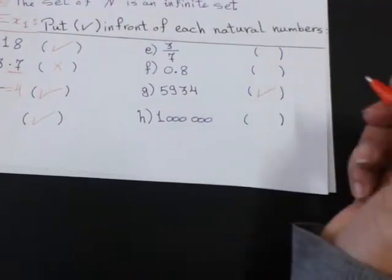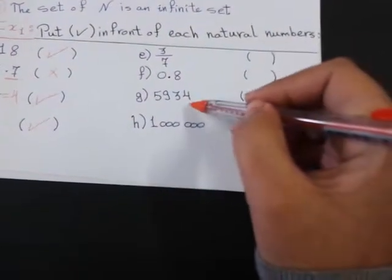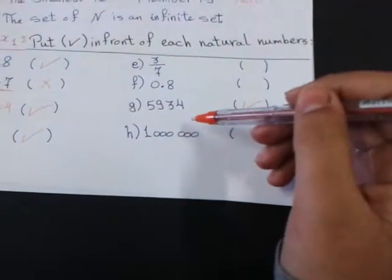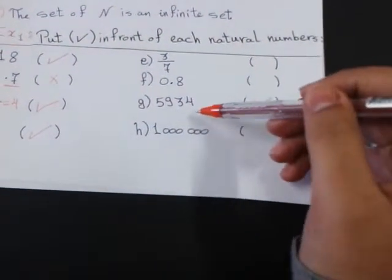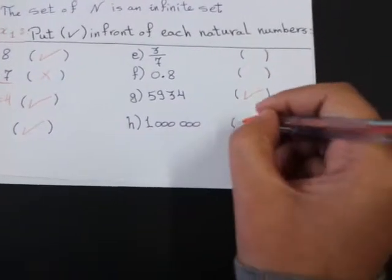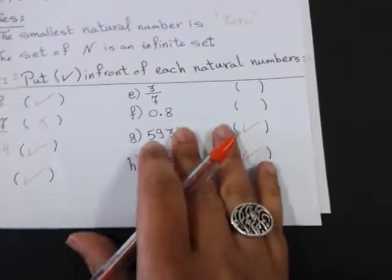This is a natural number. Why it's natural? It's very big. Yes, because the natural number is an infinite set. So, I can't stop counting. 1 million, also a natural number. Okay, let's solve example number 2 together.